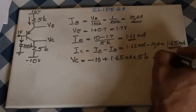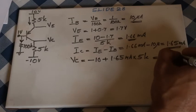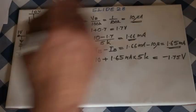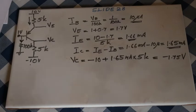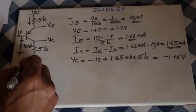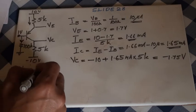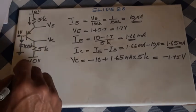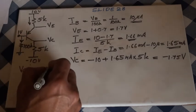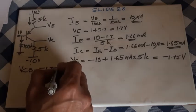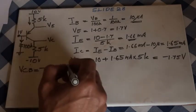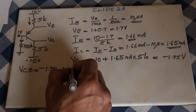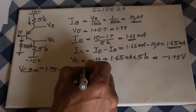Now, a question: is the base-collector junction in reverse bias? There's a way to find out - work out VCB. VCB is voltage at the collector, that is minus 1.75, minus voltage at the base, which is 1. We get minus 2.75 volts.